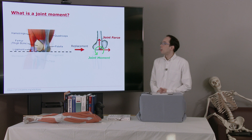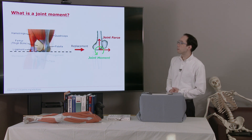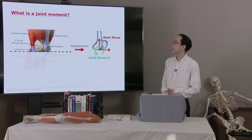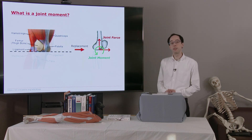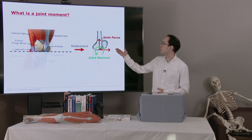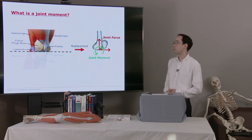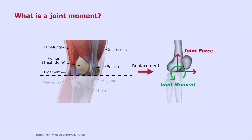So what is a joint moment? We know that we have lots of biological structures across our joints — muscles, ligaments, and so on. What we're going to do in this chapter is collapse all these things down into equivalent forces and an equivalent net joint moment. Notice that this joint moment is the net joint moment — it's not the actual moment that would be experienced in the joint, and similarly with the forces.